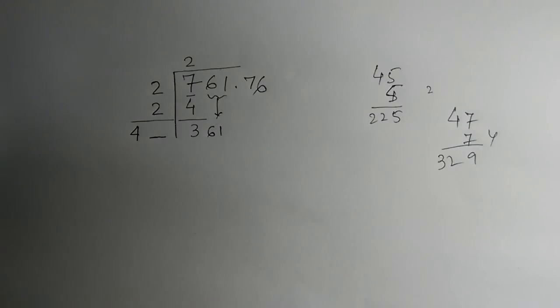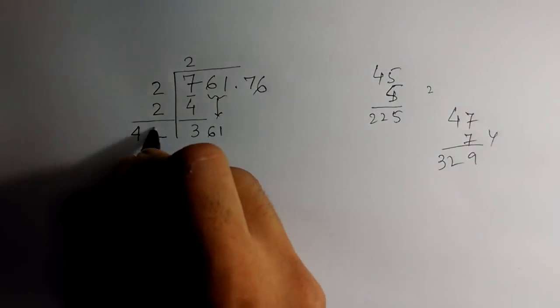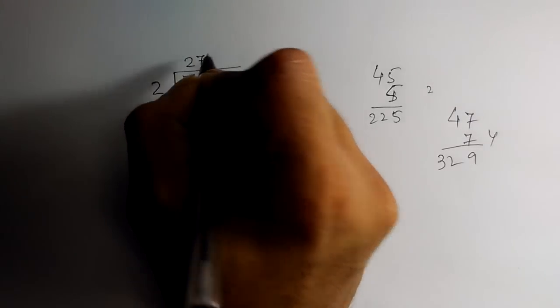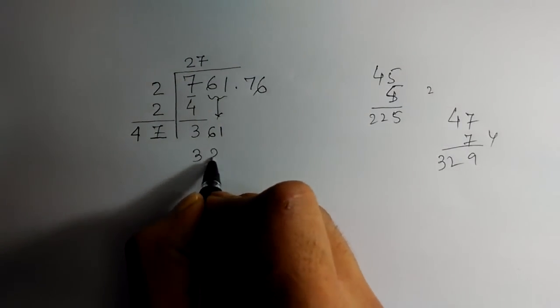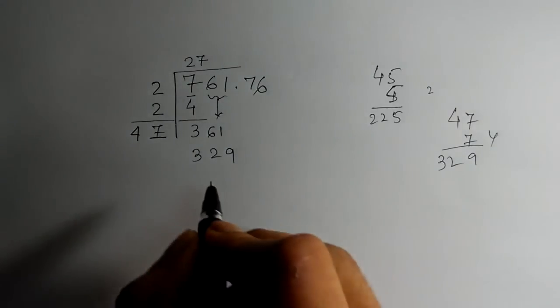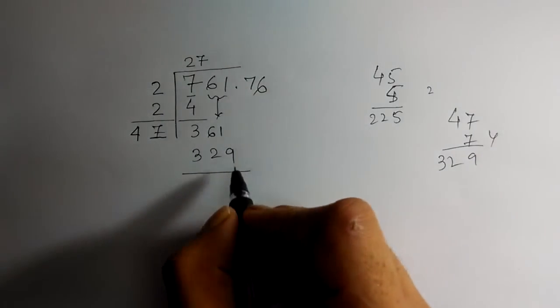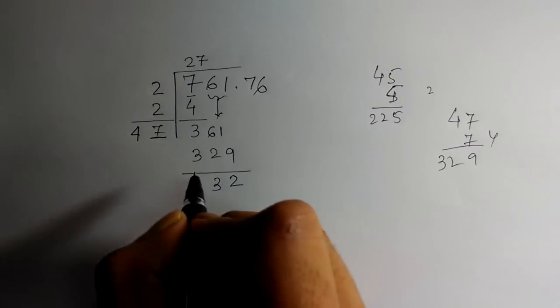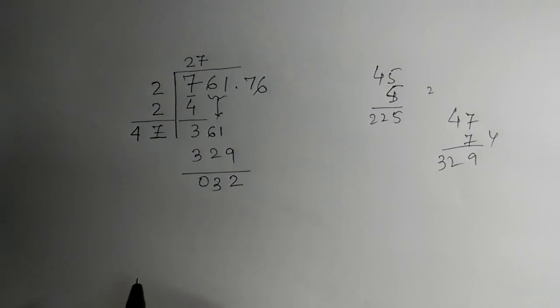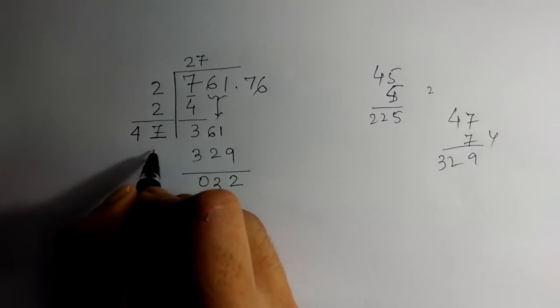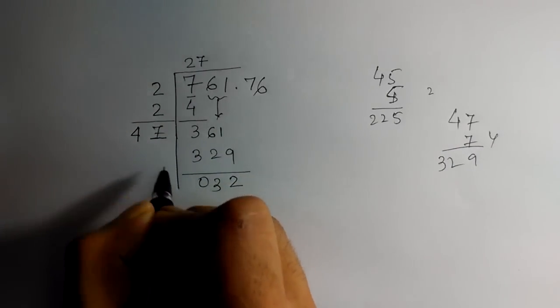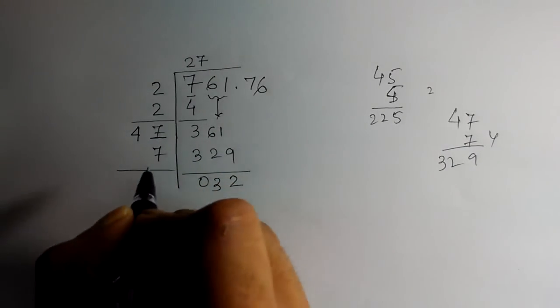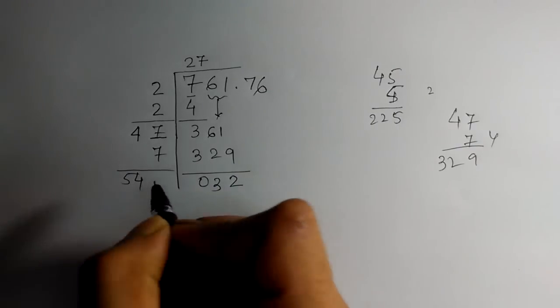We can't take 48, 48 times 8 will be more than 361. So 47 times 7 is 329. Subtract it, 361 minus 329 is 32. It is 0 in the hundreds place.